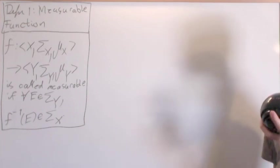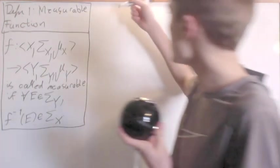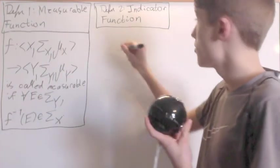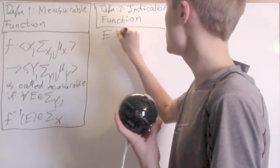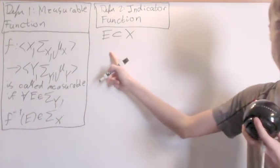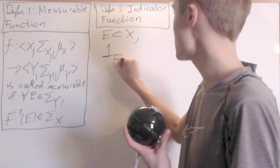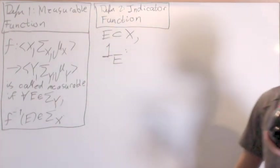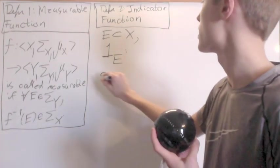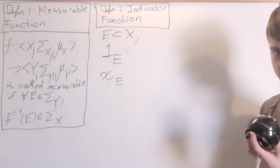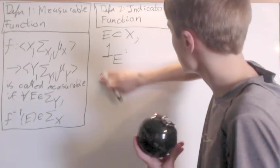So now, what I'm going to also introduce is something called an indicator function. What we start off with is a subset e of your space x. So, given e a subset of x, one e, I'll denote it like that. You may also see something like chi e, but I'm going to use one.